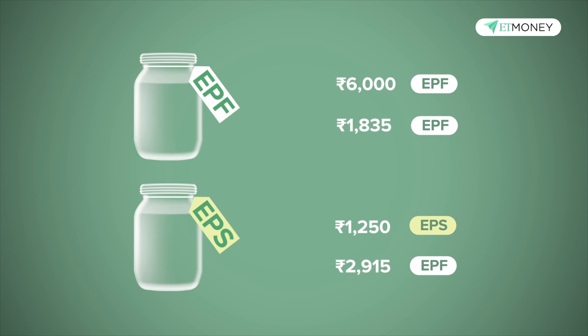There are three scenarios under which 100% of the EPF can be withdrawn: one, upon attaining the age of 58 years; two, if you are unemployed for two months or more; and thirdly, upon the premature death of the member, upon which the entire corpus is given to the appointed nominee. For premature withdrawals, there are specific scenarios permitted such as education, purchase of land, marriage, medical emergency, and home loan repayment, each with its own terms and conditions.